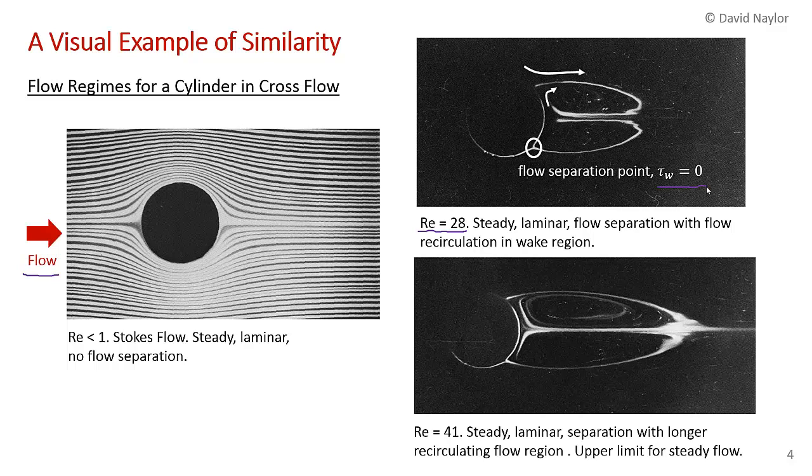If you increase the Reynolds number even more—this is at 41—you get a very similar pattern. Separation occurs at a similar point but the recirculated flow region gets longer. This is about the limit for steady flow. Beyond this you start to get oscillating flows.